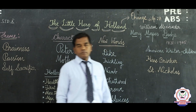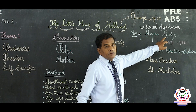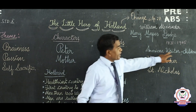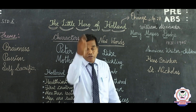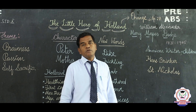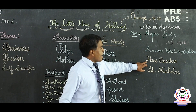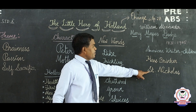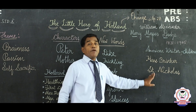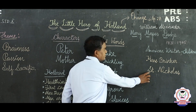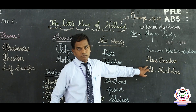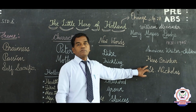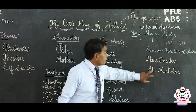Now let's see something about the author. Mary Mapes Dodge was born in 1831 and died in 1905. She is an American writer, especially for children, and has written numerous books, stories, and novels. Her famous book is 'Hans Brinker.' She also started a magazine called 'St. Nicholas,' mainly for children, which she ran for 30 years.